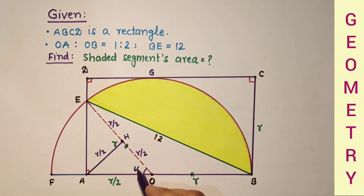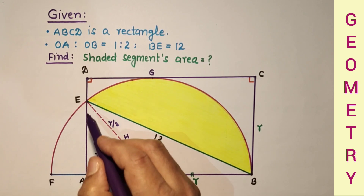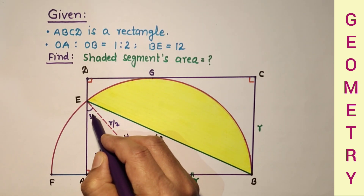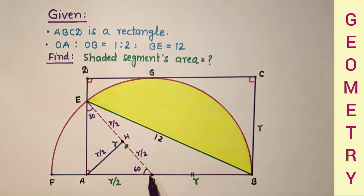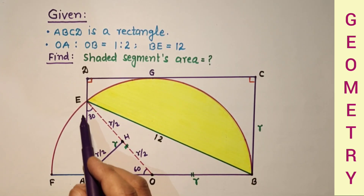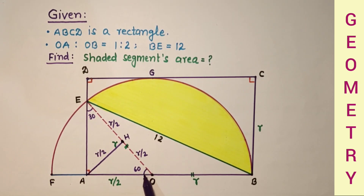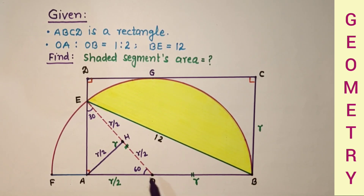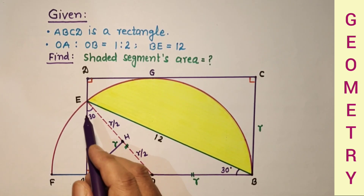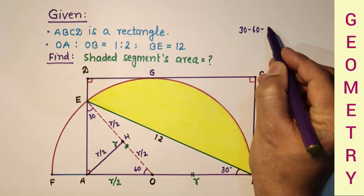This angle is 60 degrees, this is 90 degrees, so this will be 30 degrees. If this central angle is 60 degrees, then the two base angles will each be 30 degrees. We can also say this arc subtends 60 degrees at the center and 30 degrees on the circumference. Now using the 30-60-90 theorem.